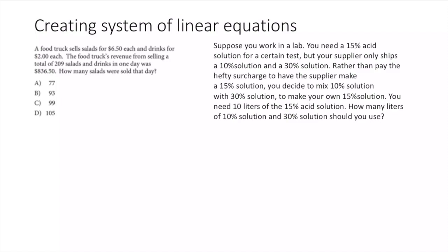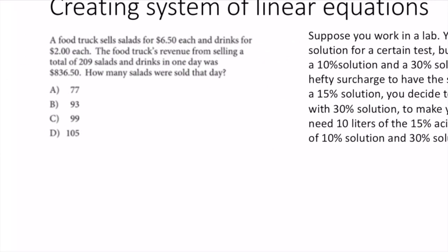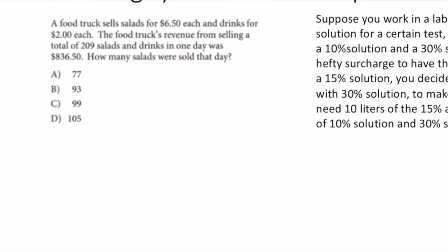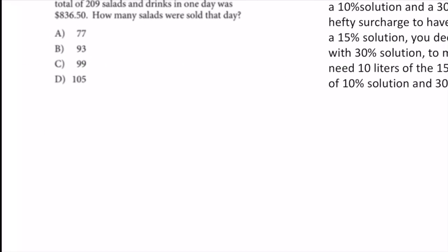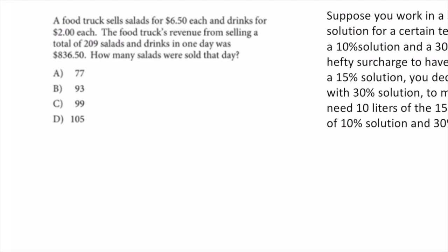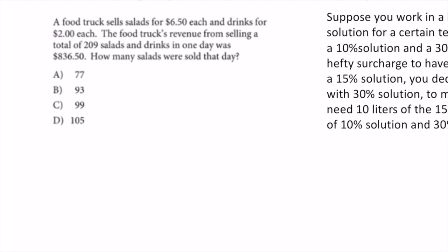Two more examples: a food truck sells salads for $6.50 and drinks for $2 each. The food truck's revenue from selling a total of 209 salads and drinks in one day was $836.50. How many salads were sold that day?